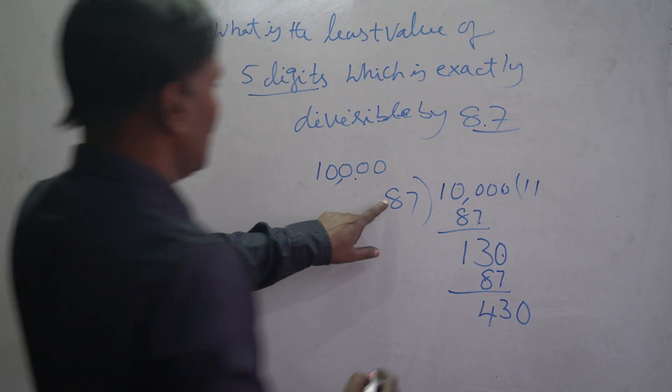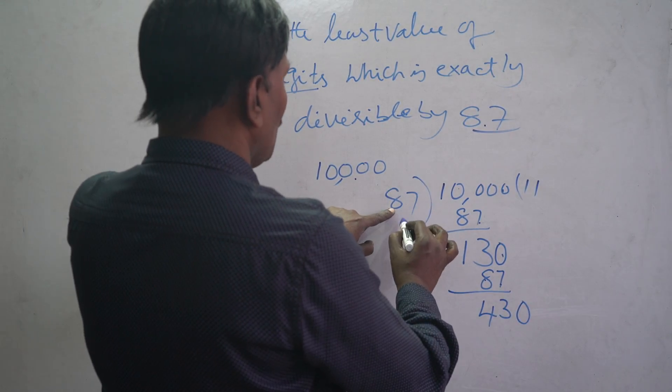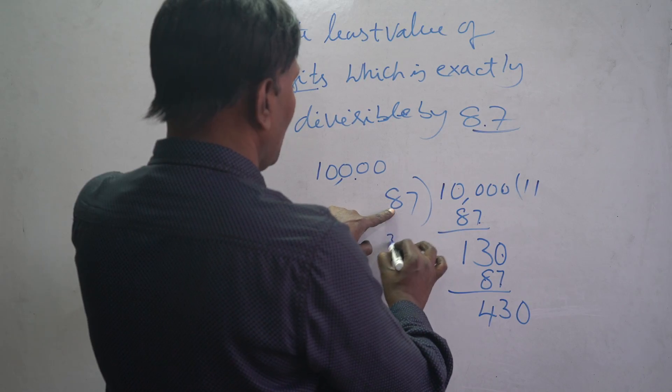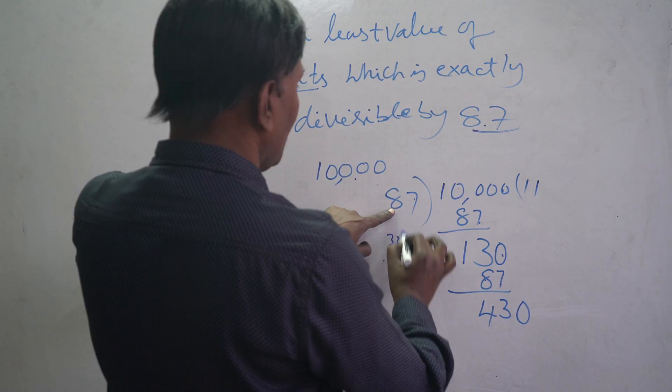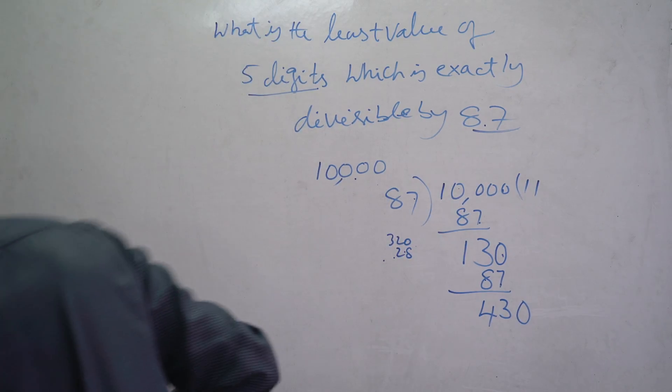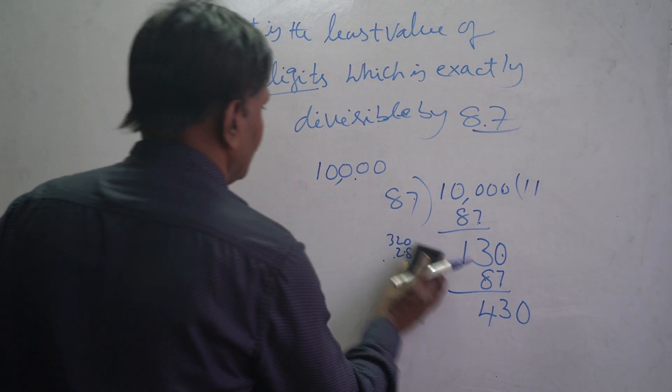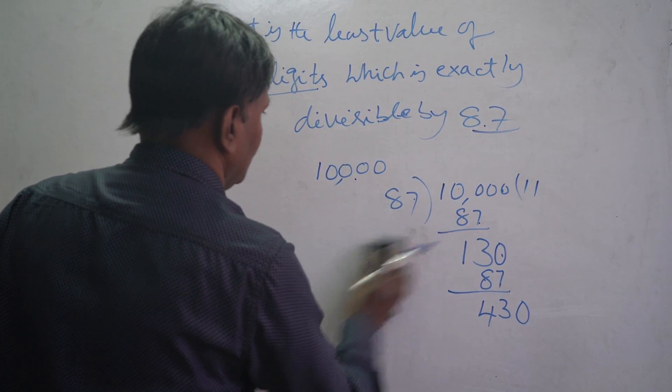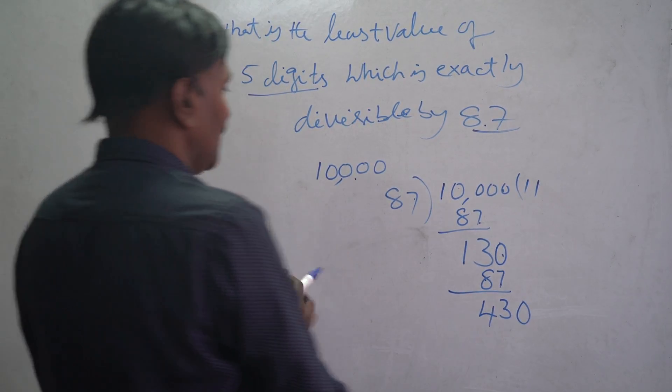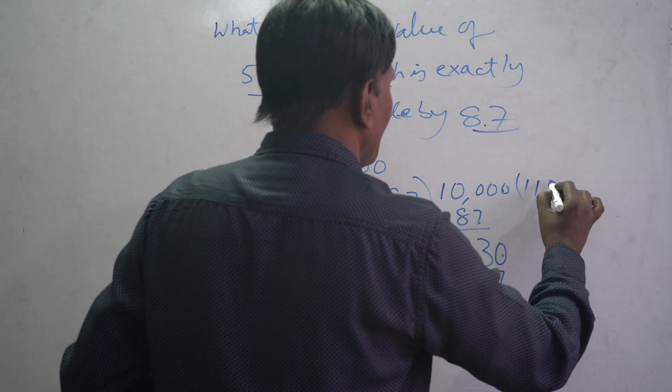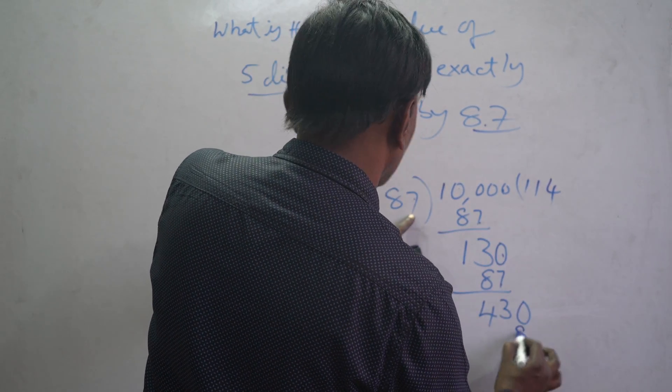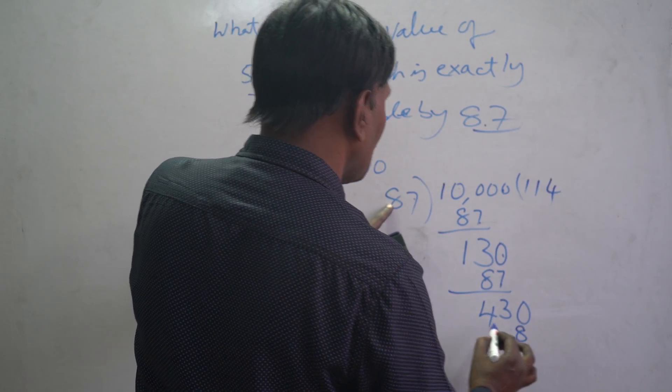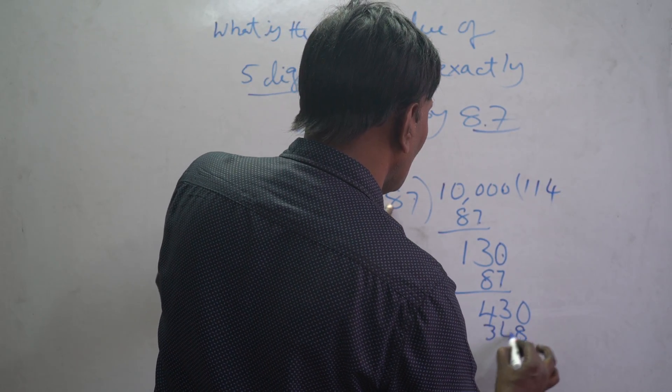87 into 430: how many times does it go? Let's see. 87 times 4 is 28, carry over. 87 times 4 is 348. So four times it will go. 87 times 4: 4 times 7 is 28, 4 times 8 is 32. 348 minus 348.